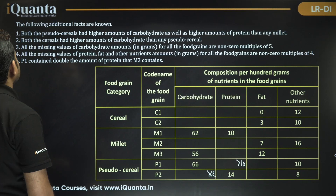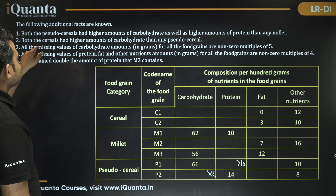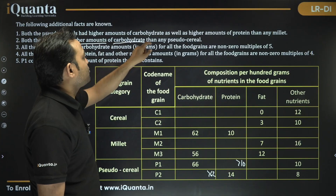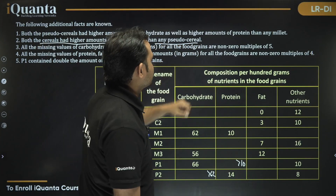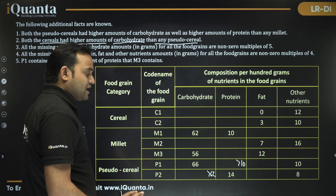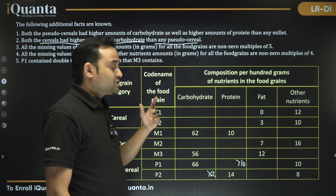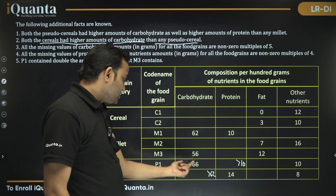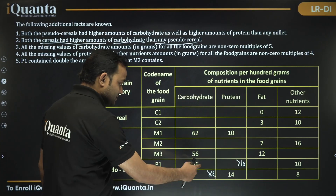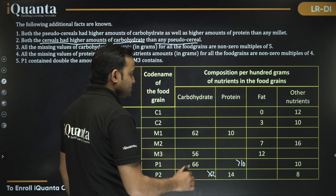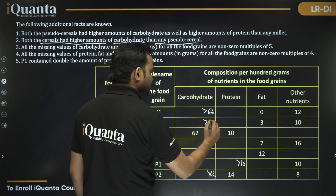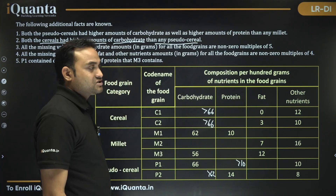Clue 2: Both cereals C1 and C2 had higher amounts of carbohydrate than both pseudo cereals. The higher of the known pseudo cereal carb values is 66, so both C1 and C2 must have carbohydrates greater than 66.